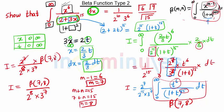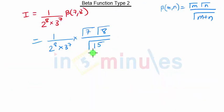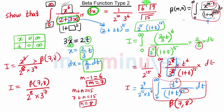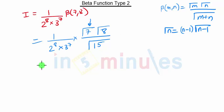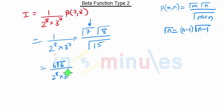In the denominator we have gamma of 15, but in the numerator we want gamma of 6 and gamma of 9. We know that gamma of n is nothing but n minus 1 into gamma of n minus 1. So instead of gamma of 7, we can write it as gamma of 6 into 6, upon 2 raise to 8 into 3 raise to 7.